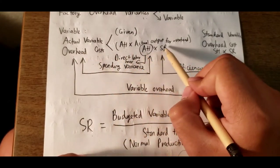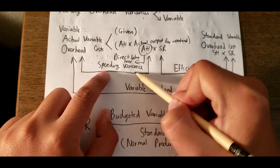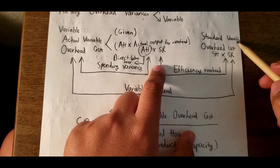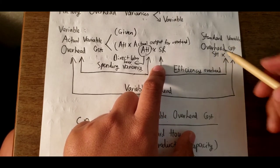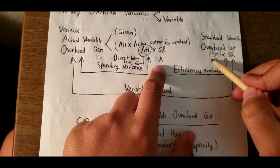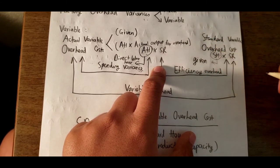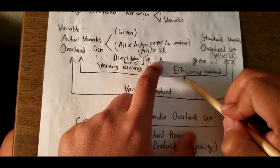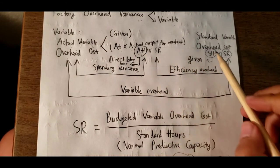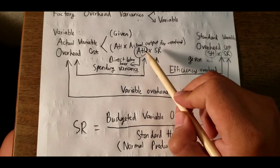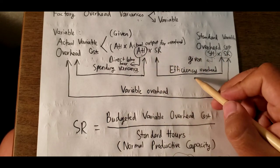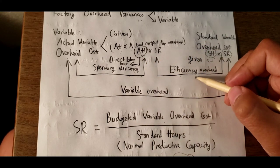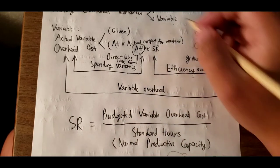The difference between actual variable overhead cost and actual hours multiplied by standard rate is called spending variance. The next calculation is standard variable overhead cost. We find the difference between these two values. When standard hours are below actual hours, that's unfavorable; when standard hours are higher than actual hours, that's favorable. This efficiency variance applies similarly to fixed overhead.